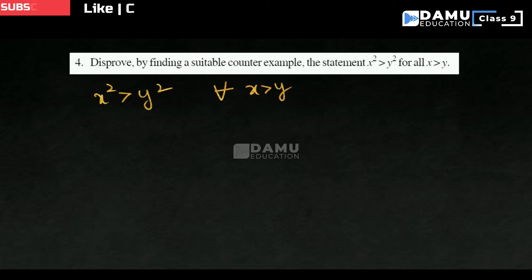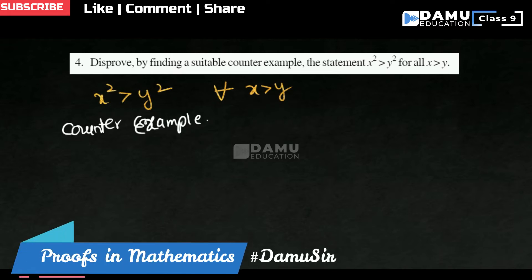First we have to take one example for this. Disprove means they are telling the proofs. For this, counter example we have to take. Counter example means if you need to take one example for that, the given condition should not satisfy. It should be reversed to that.